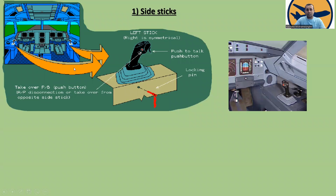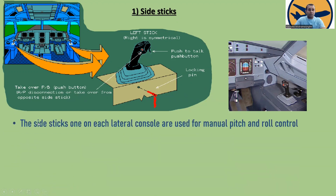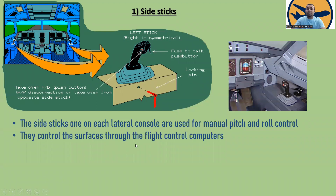In the cockpit you can see the red takeover push button for autopilot disconnection or takeover from the opposite side stick. Here is the left side stick — the right side is symmetrical. There is a push-to-talk push button and a locking pin. The side sticks, one on each lateral console, are used for manual pitch and roll control.